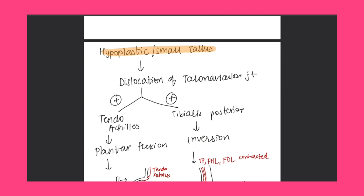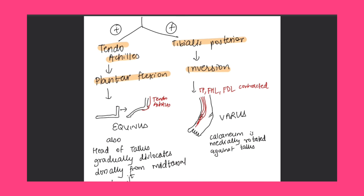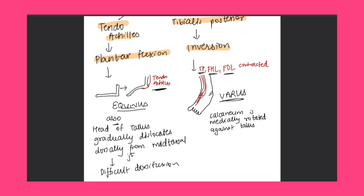The basic pathology is a hypoplastic or small talus. This leads to dislocation of the talonavicular joint, precipitated by tendo Achilles contraction causing plantar flexion, and tibialis posterior contraction causing inversion. Equinus is due to contraction of tendo Achilles. Varus is due to contraction of tibialis posterior, flexor hallucis longus, and flexor digitorum longus. The head of the talus gradually dislocates dorsally, making dorsiflexion difficult. In varus, the calcaneum is medially rotated against the talus.